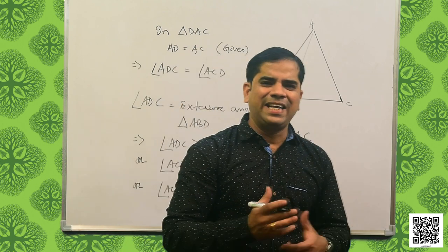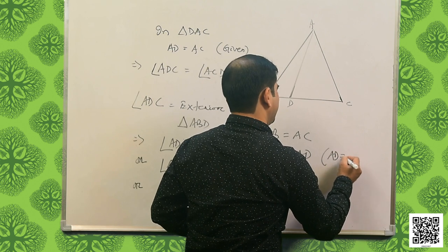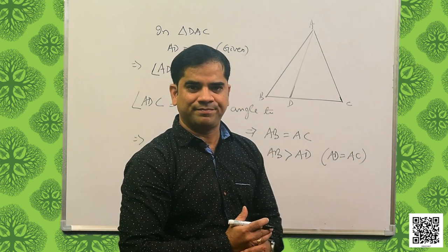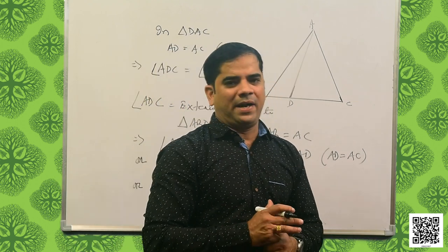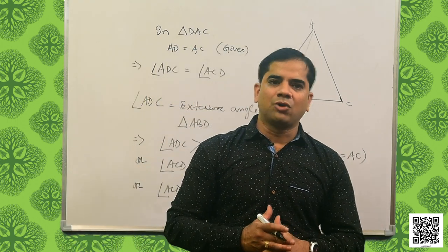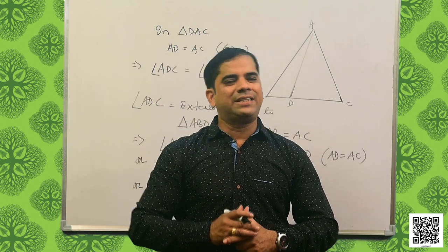Therefore AB is greater than AC, since AB is the side opposite to the larger angle in triangle ABC. And since AD is equal to AC, we conclude that AB is greater than AD. In our next class we will discuss some more concepts about triangles. Till then, keep smiling. Take care. Thank you.